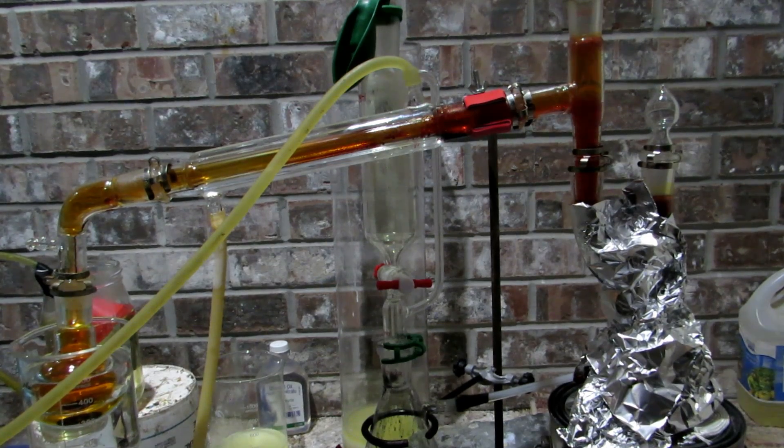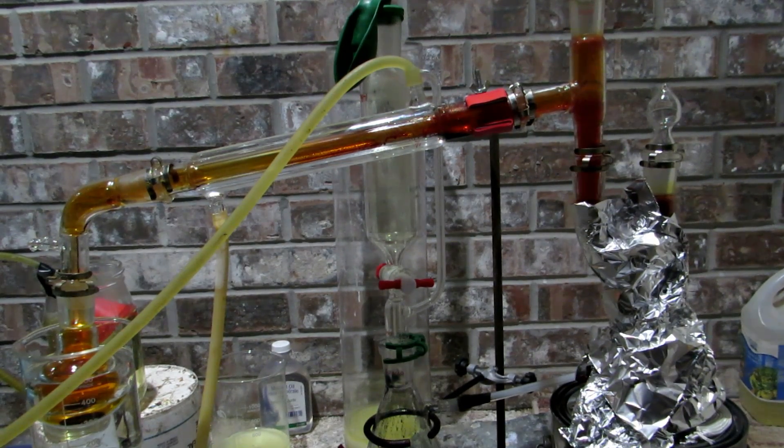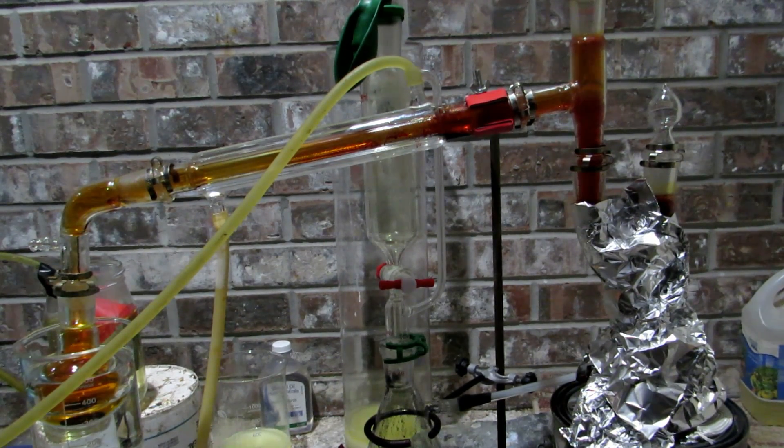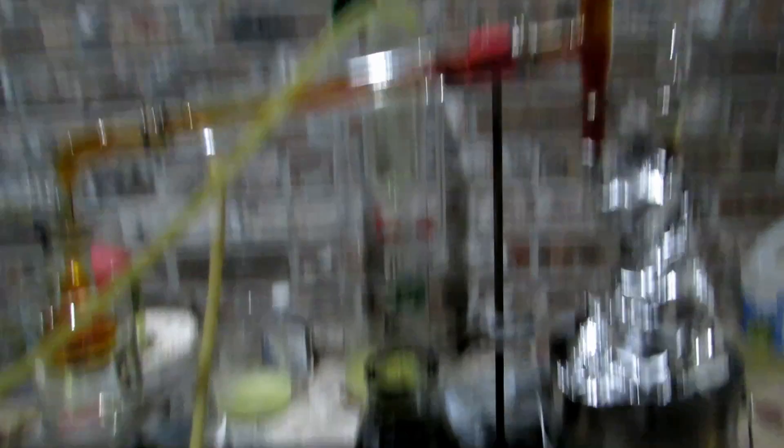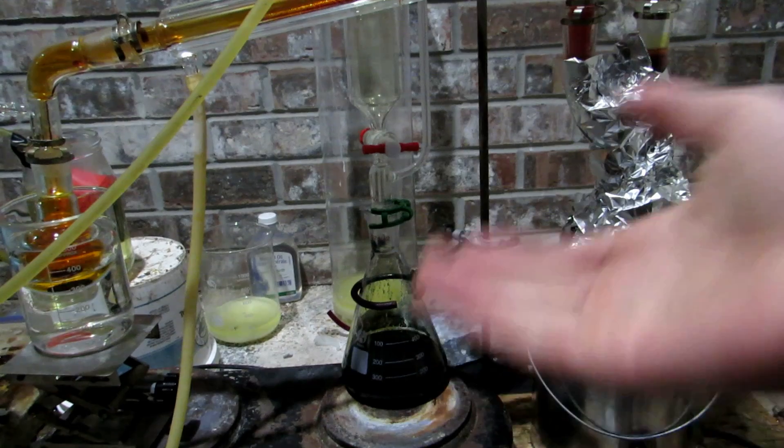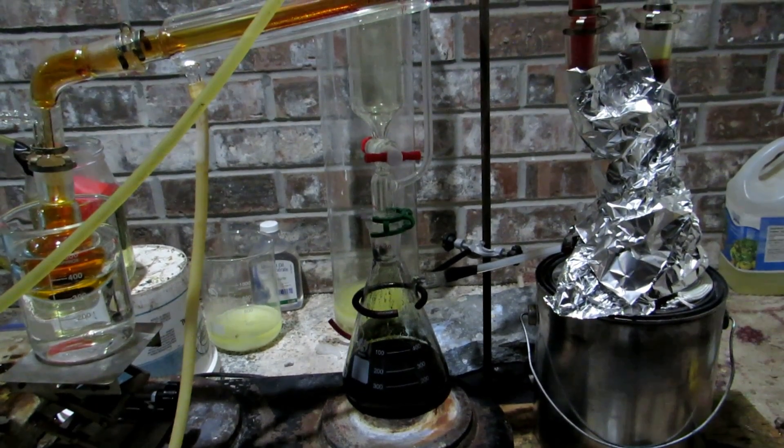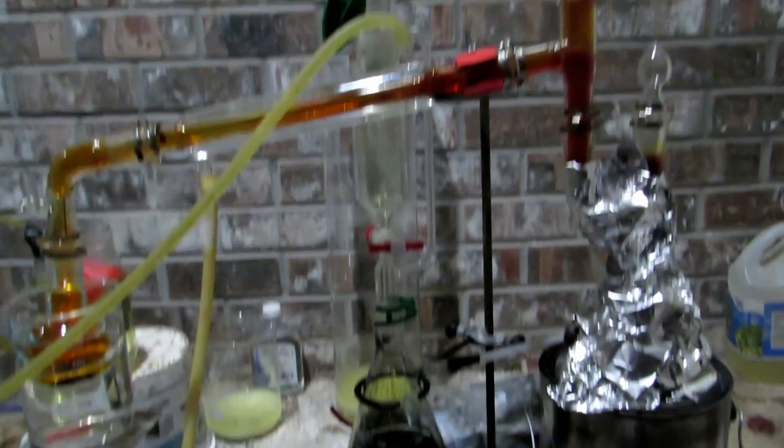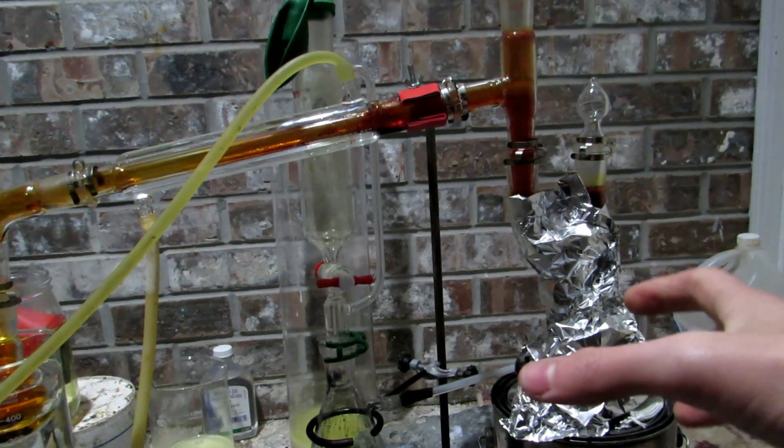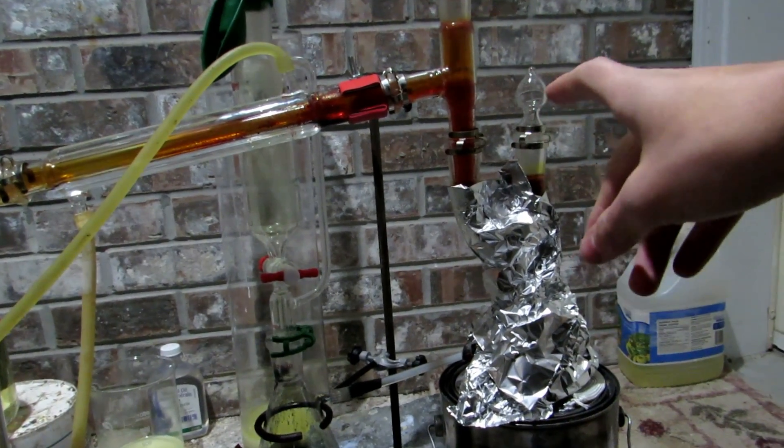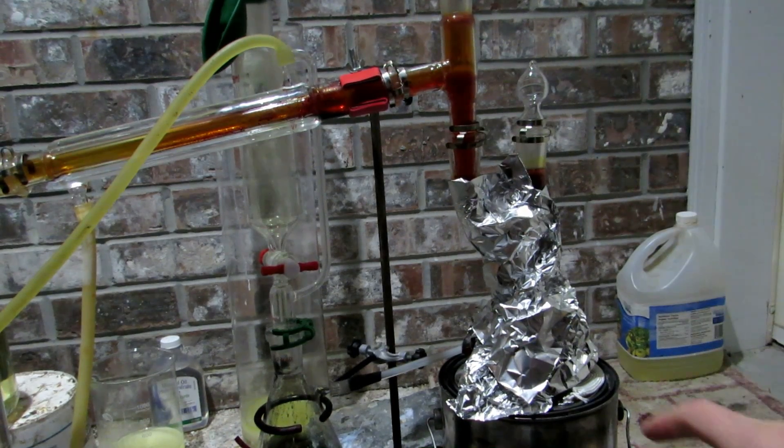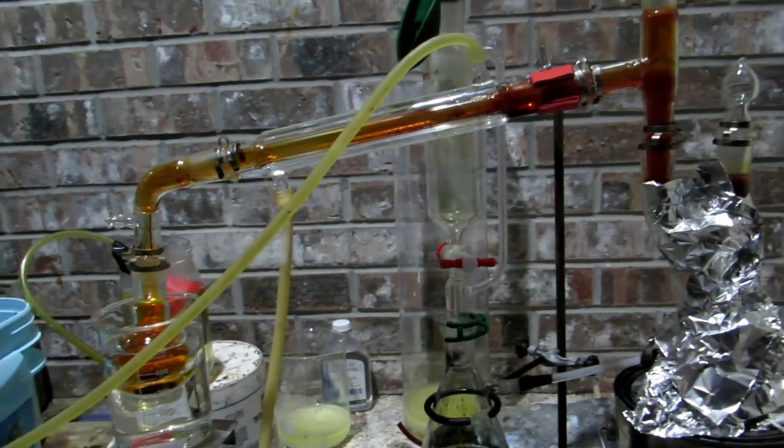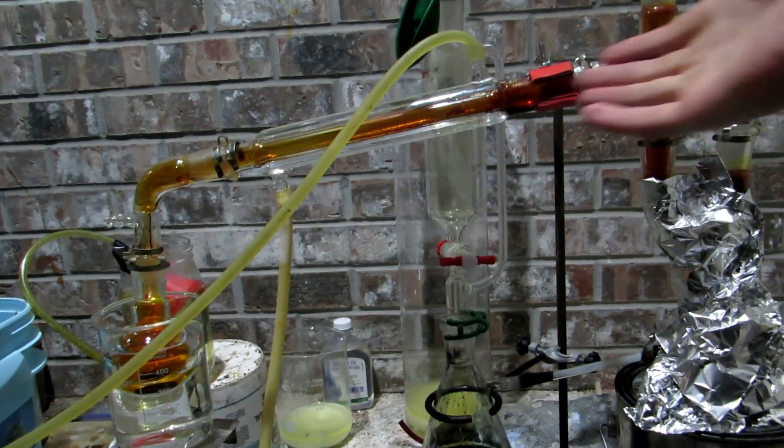Okay so once it looked like all the potassium bromide more or less reacted the chlorine gas generator was taken apart and also stopped producing chlorine gas. A piece of aluminum foil was placed around the apparatus and the place where the tube went in before was replaced with a stopper. The temperature was then ramped up on our heating mantle here and you can clearly see we are now distilling bromine.